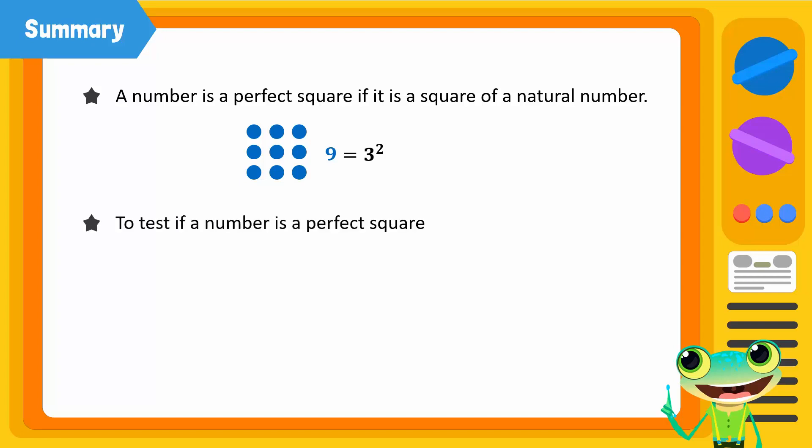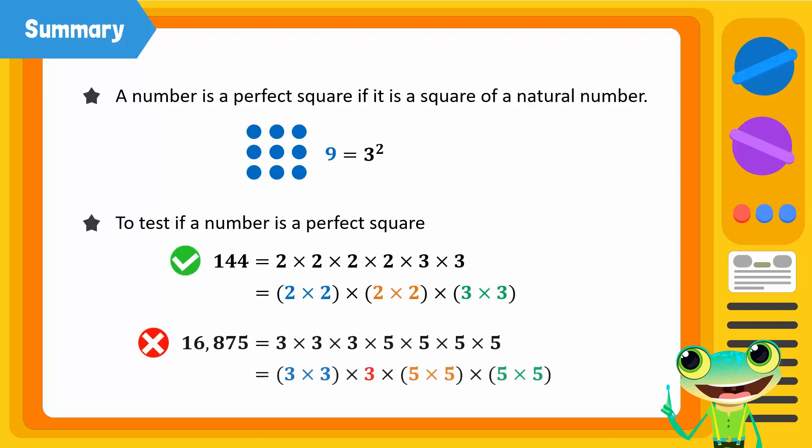To check if a number is a perfect square, break it down into its prime factors and see if all the factors can be paired up. If not, the number is not a perfect square. See you later!